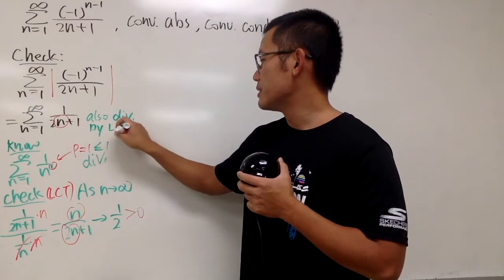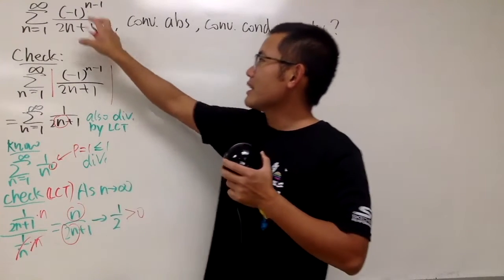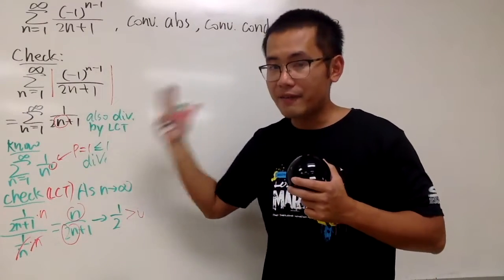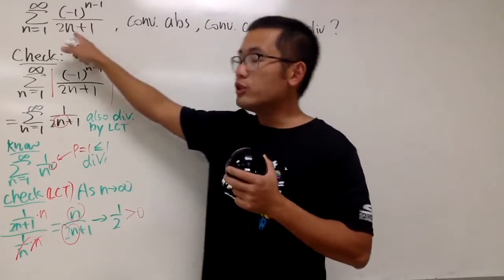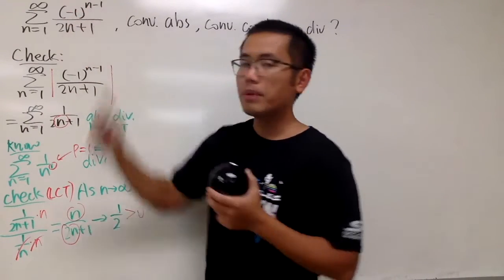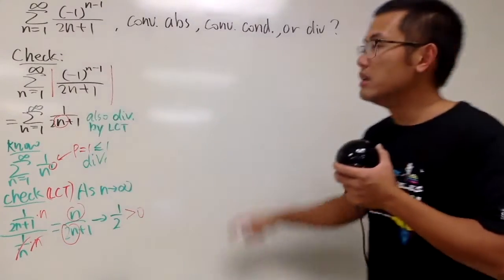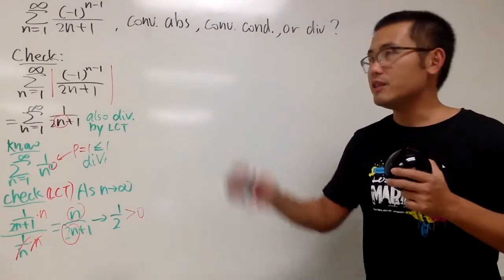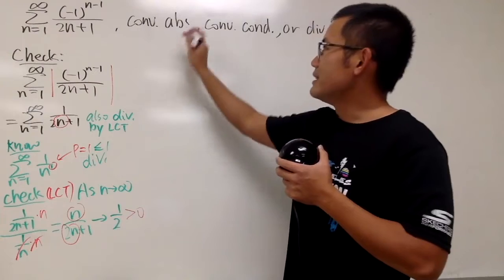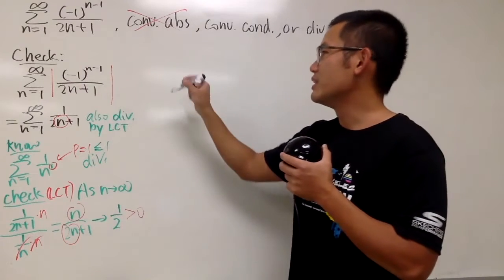But this is not the original question. The original question is does this series converge absolutely or not? As we've seen, if you take the absolute value, it diverges. But we also have to check: does the original alternating version, with (-1)^(n-1), converge? If so, this would be a conditionally convergent series. If not, it still diverges.